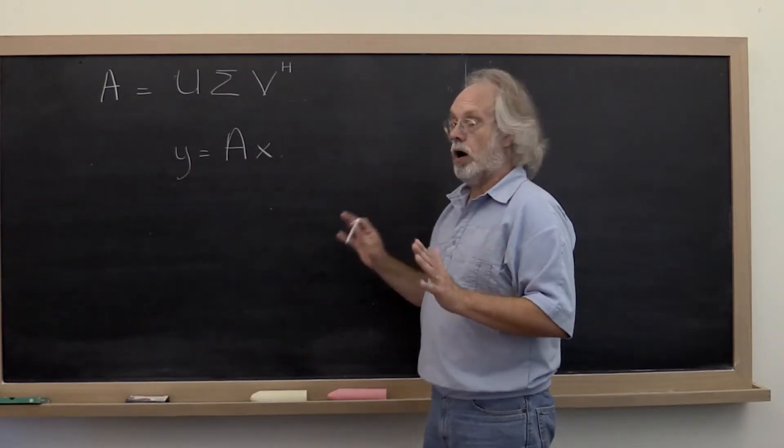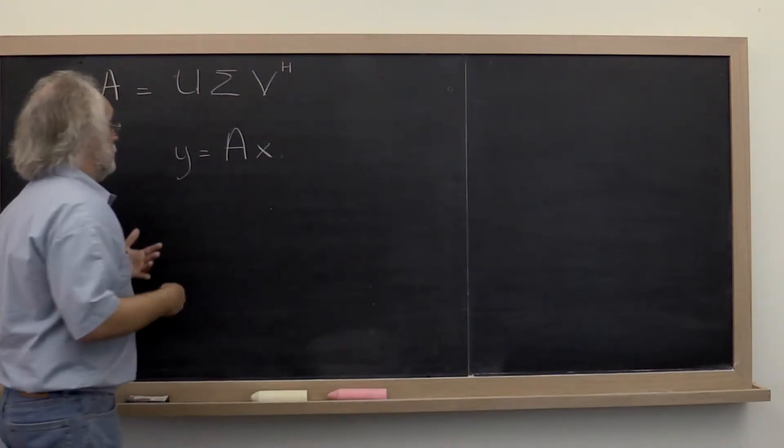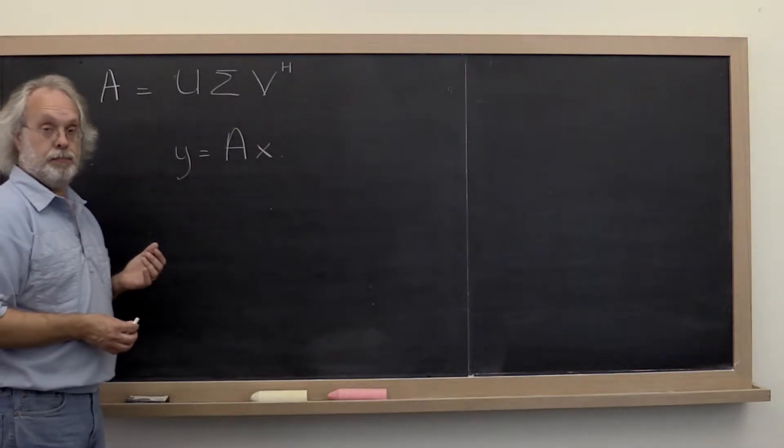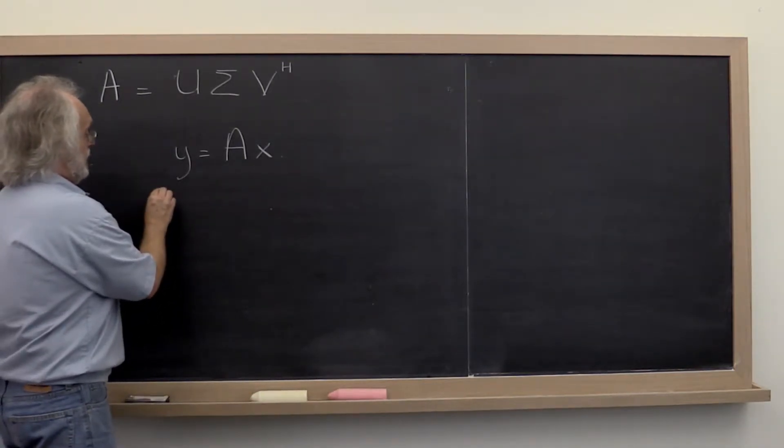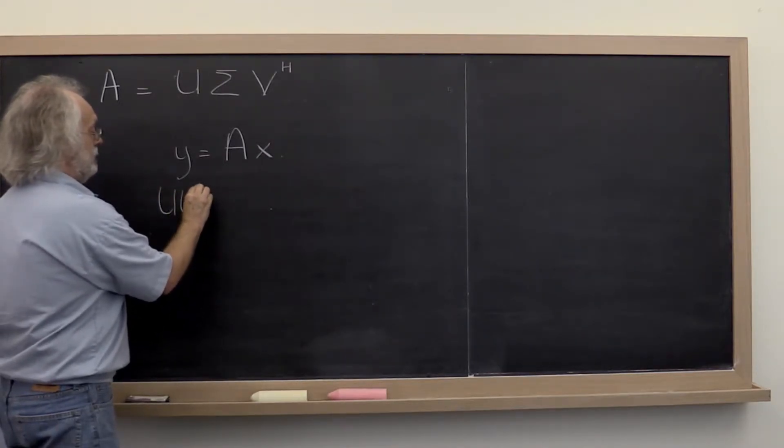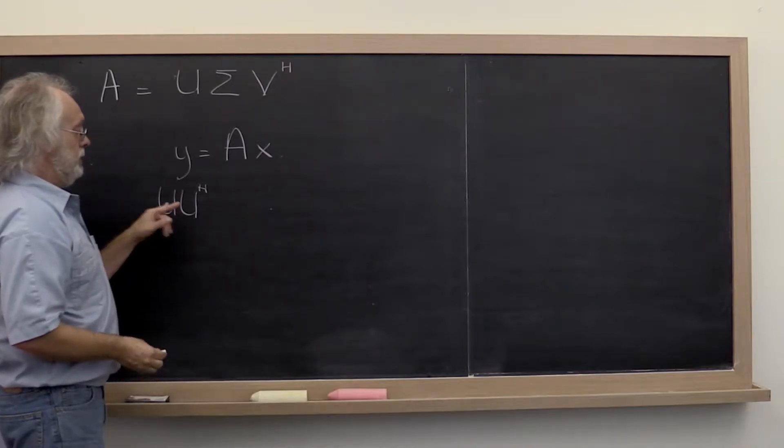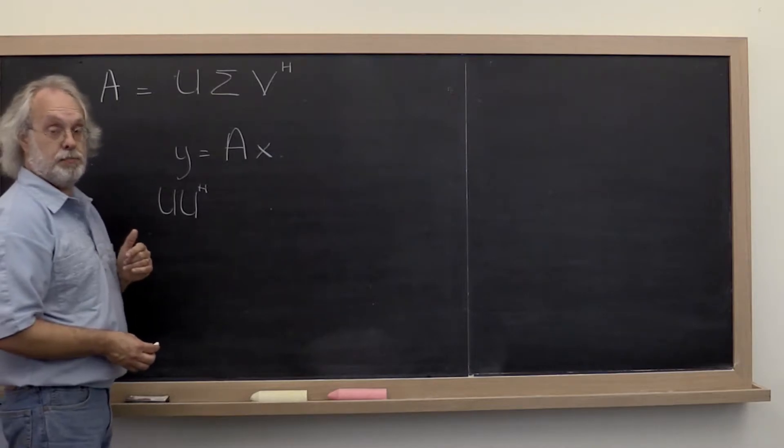Now we saw that we can always multiply a vector by the identity. So one thing we can do is take y and multiply it by the identity, except that we split the identity into the unitary matrix U times its Hermitian transpose.